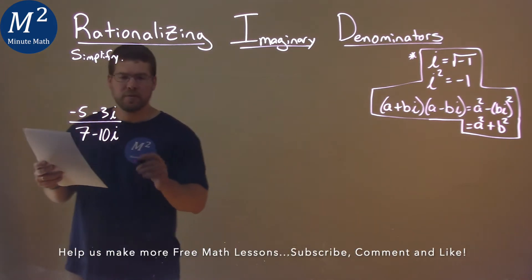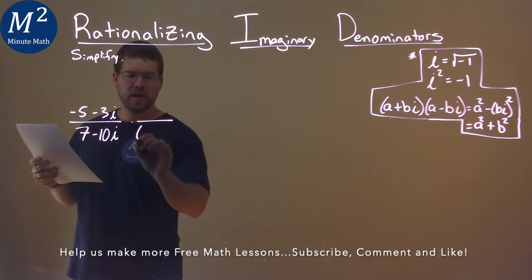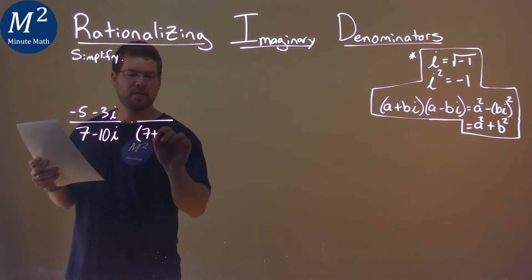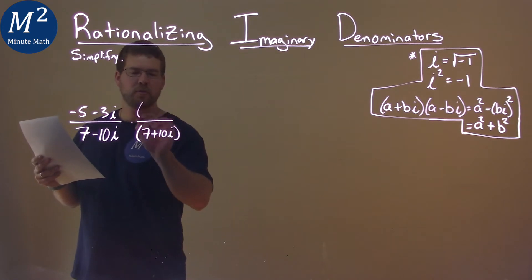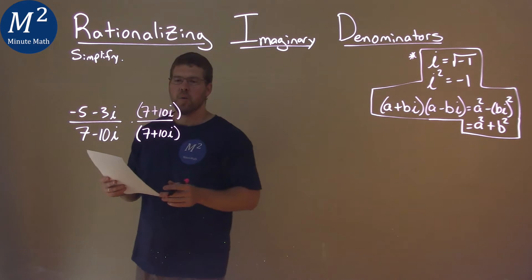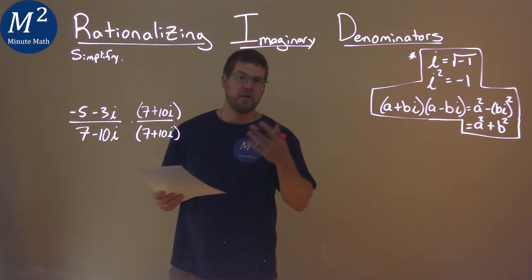Well, what do I want to do? I look at my denominator, and I'm going to write its complex conjugate, 7 plus 10i. And let's put that in the numerator, 7 plus 10i. What that does, eventually we'll get i's out of the denominator.